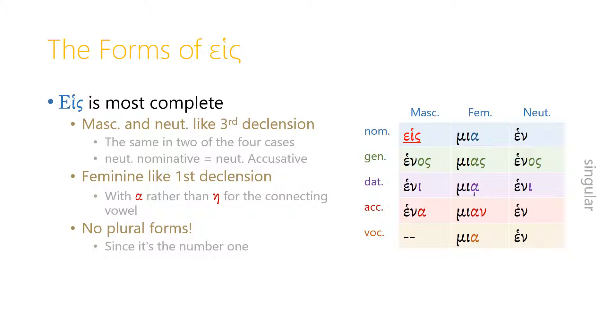Heis is the most completely declined of the numbers. The masculine and neuter are declined like regular third declension nouns, except that, not unsurprisingly, the masculine nominative singular is irregular. The genitive and dative forms of the masculine and neuter singular are the same, henos and heni. We haven't seen the dative case yet, by the way, but I'm including it here for the sake of completeness, because we're going to see it in the next badge set, and you'll want to be able to look back at this video.